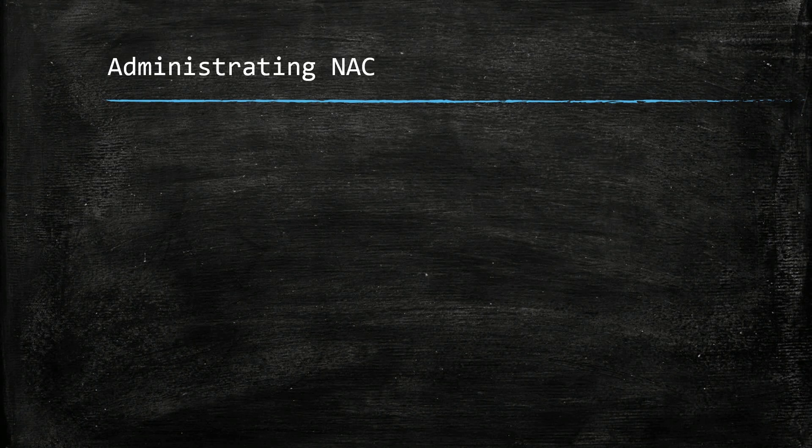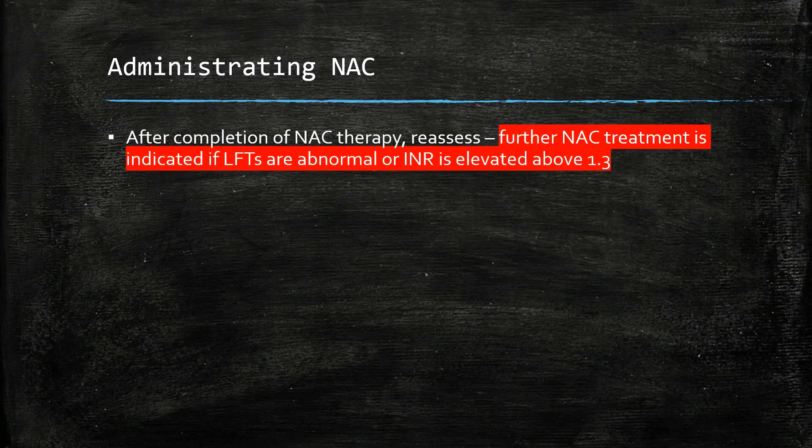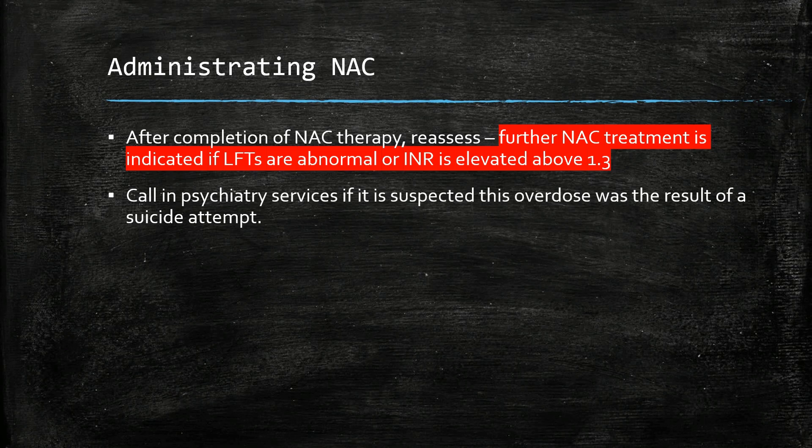Following NAC administration, it is important to reassess. Further NAC treatment is indicated if liver function tests are abnormal or the INR is elevated above 1.3. Slight elevations in INR do occur with NAC therapy and that is normal. Get psychiatry teams involved if the suspected overdose was the result of a suicide attempt.